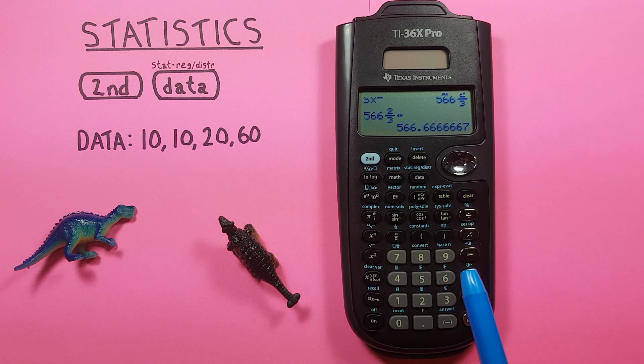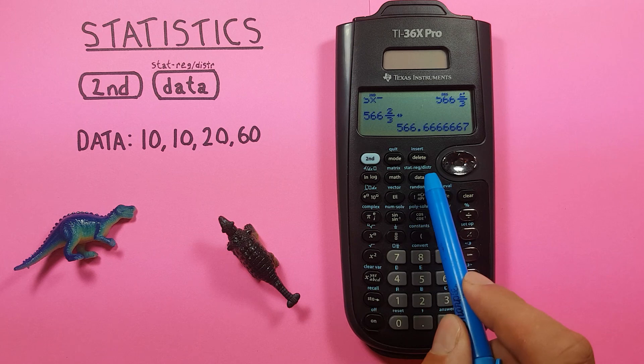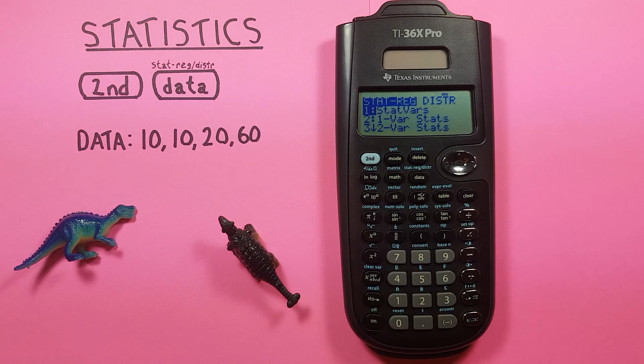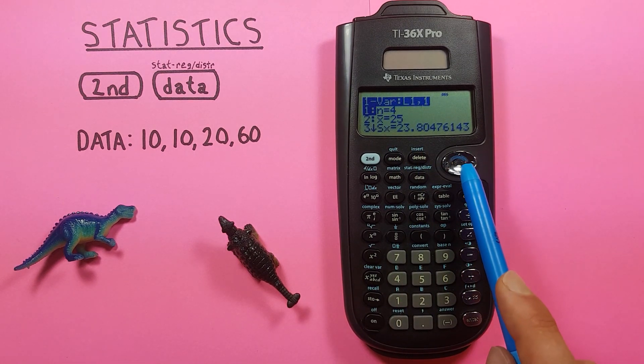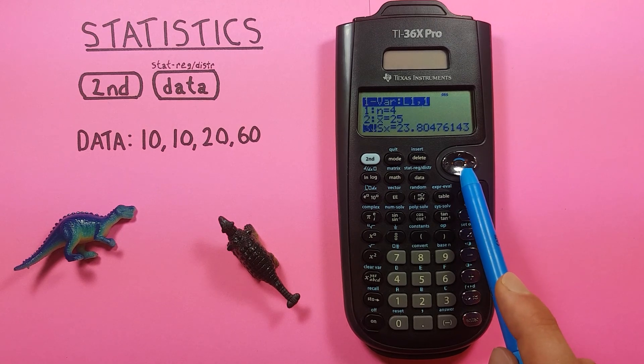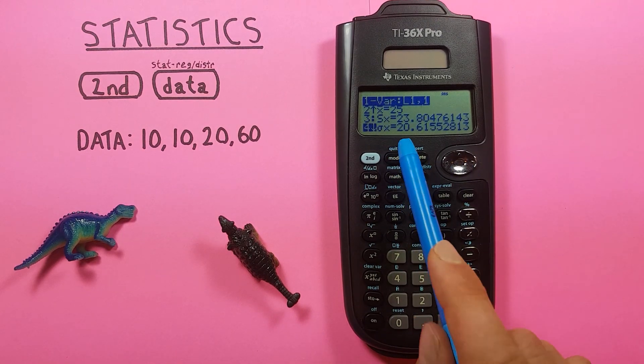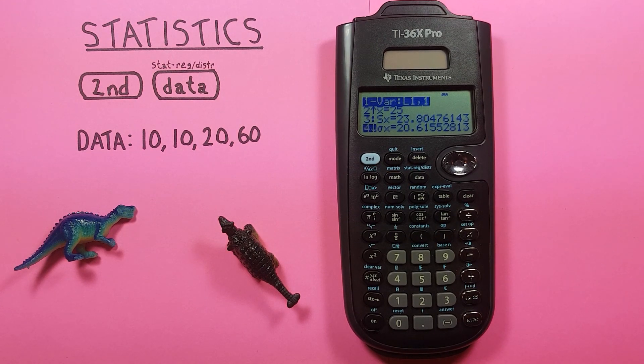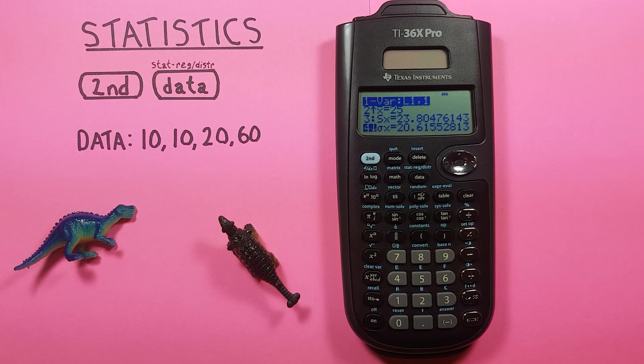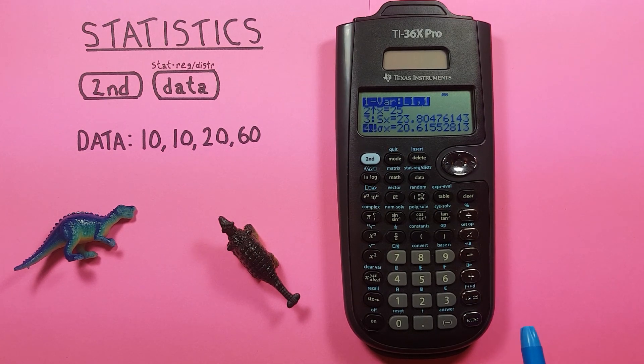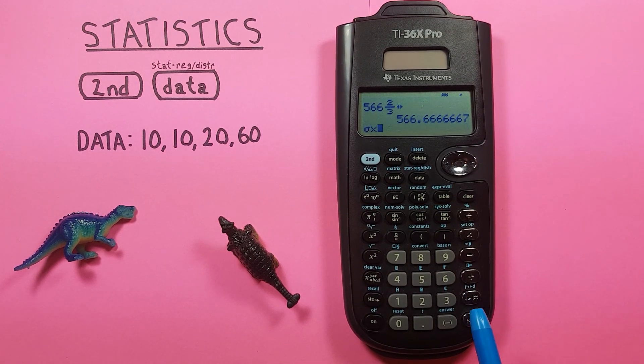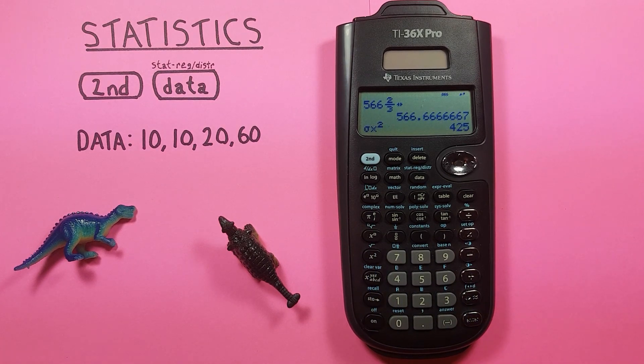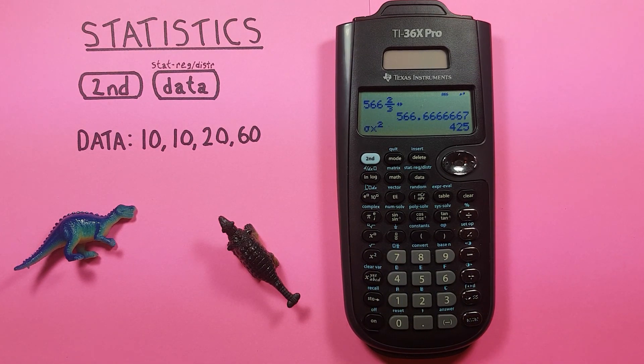All right and back to our data we get there by pressing second function data again and since our data has already been calculated we can stay with stat var. There we go back to our data. Scroll back down and we see number four gives us our population standard deviation which is 20.6155 etc. And again we can get the variance on that by pressing enter and squaring it to get a population variance of 425.